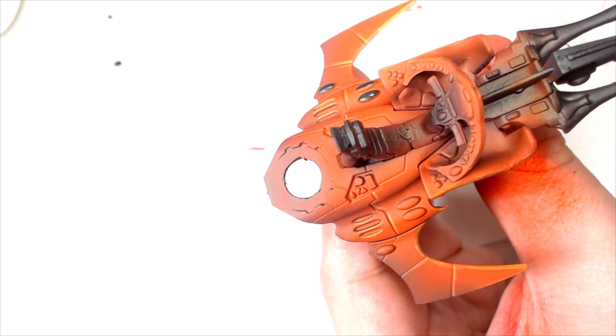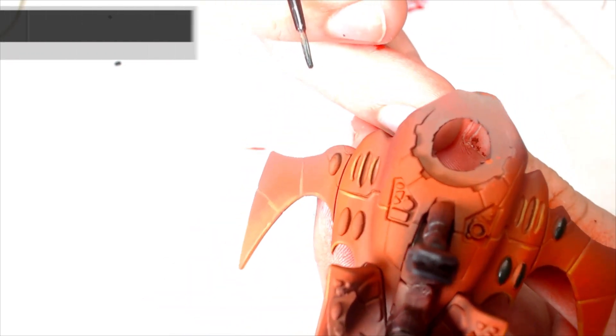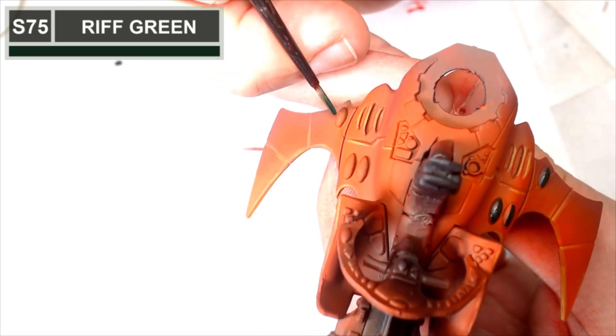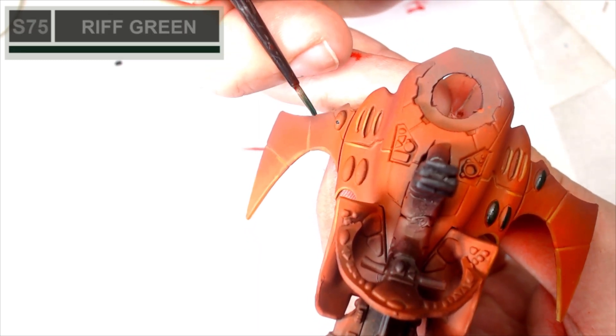So now I'm going to start on the gems, which there are a lot of. This is a typical Eldar vehicle, so it's got gems all over the place, and this is Rift Green.